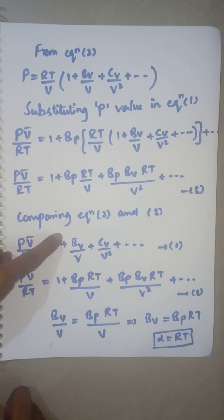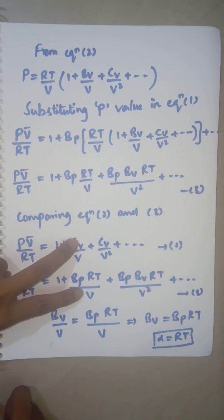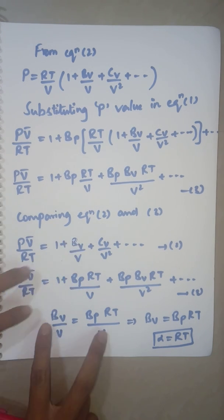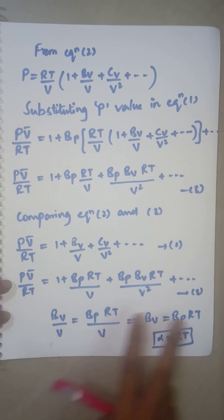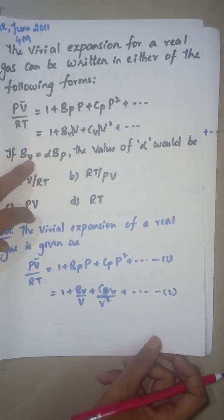So BV/V equals BP·RT/V. Now you are correlating these two particular terms. On solving what do you get? You get BV = BP·RT. That is, α equals RT.